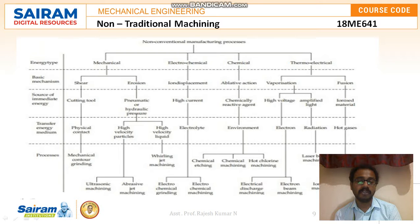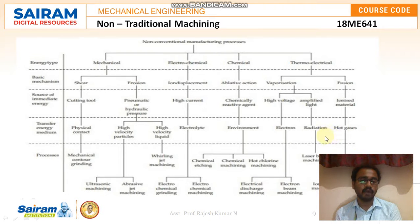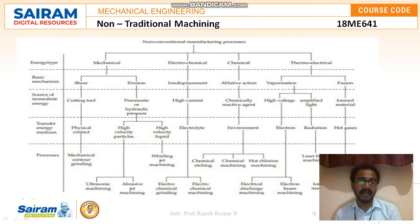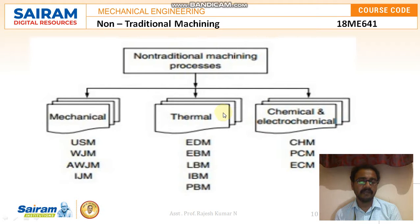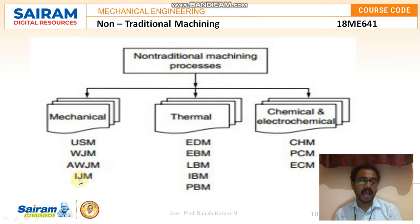Under hot gases we have ion beam machining and plasma arc machining, and we will be discussing plasma arc machining. So from this flow chart, we get to know the major types of energy and the different types of non-traditional machining processes under each. Another slide shows that non-traditional machining processes are mainly classified as mechanical, thermal, chemical, and electrochemical. Under mechanical we have ultrasonic machining, water jet machining, abrasive water jet machining, and abrasive jet machining.